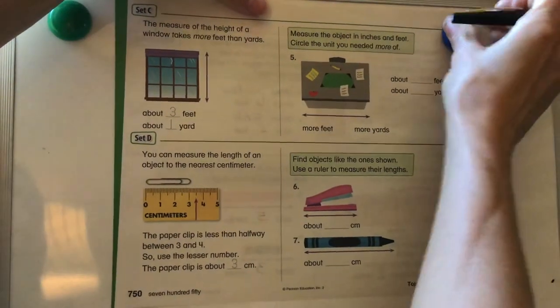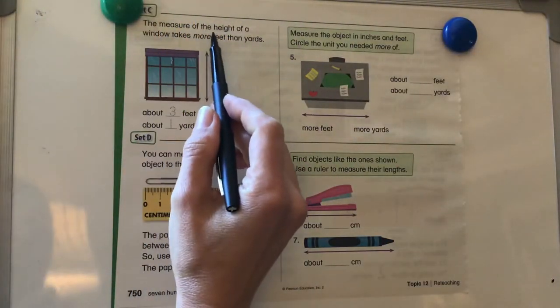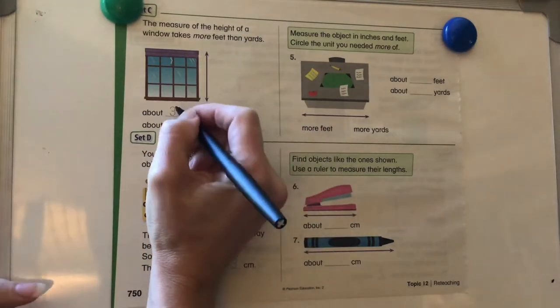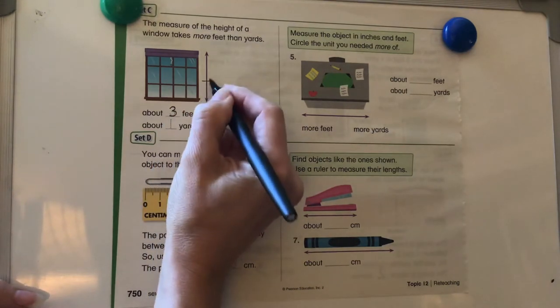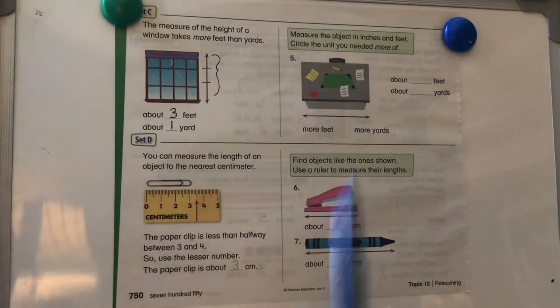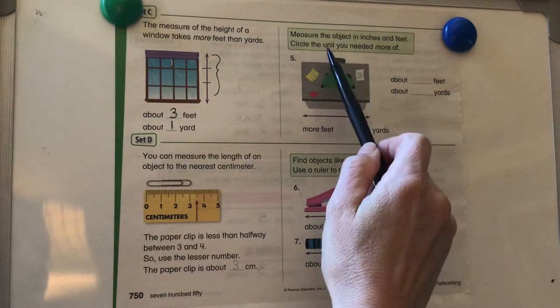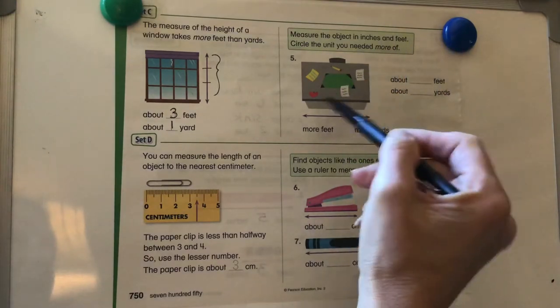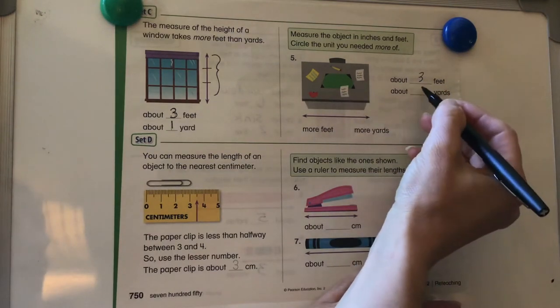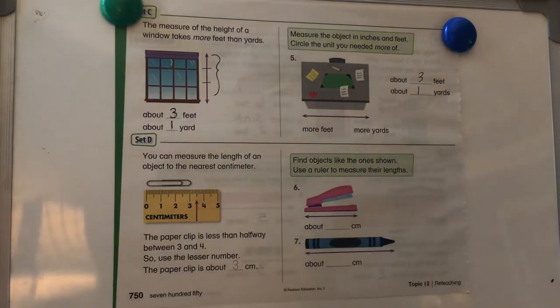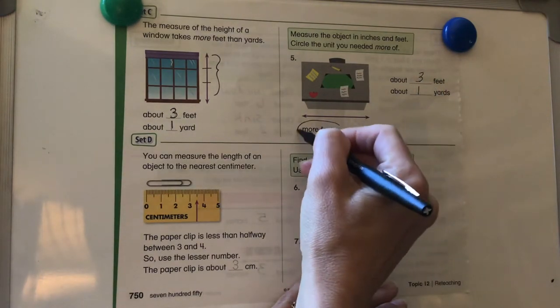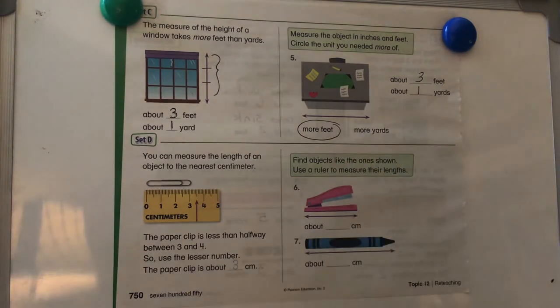Let's take a look at the back here. Set C. The measure of the height of a window takes more feet than yards because feet are smaller units. So it's about three feet, one, two, three feet, or three feet is equal to one yard. Measure the object in inches and feet. Circle the unit you will need more of. So my desk is about three feet, which is three feet is the same as one yard. So we will need more feet because you see you have the larger number. We have more feet, the bigger number.